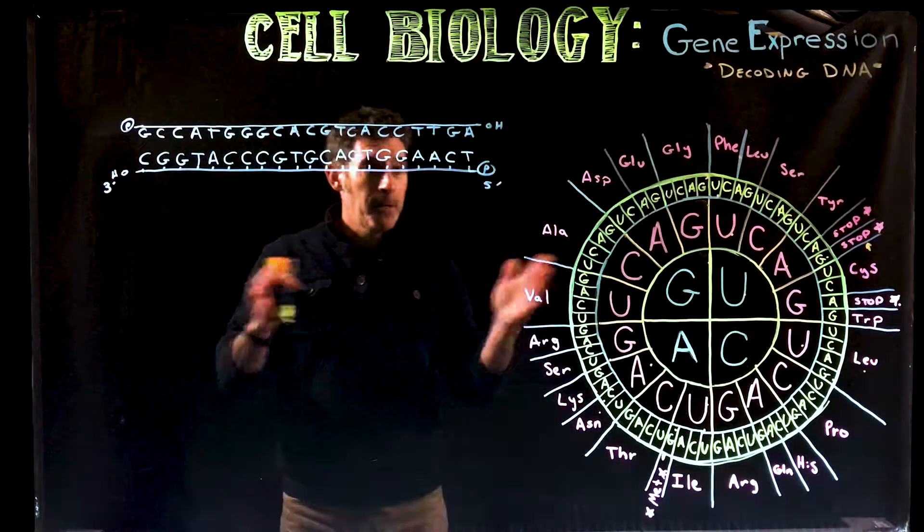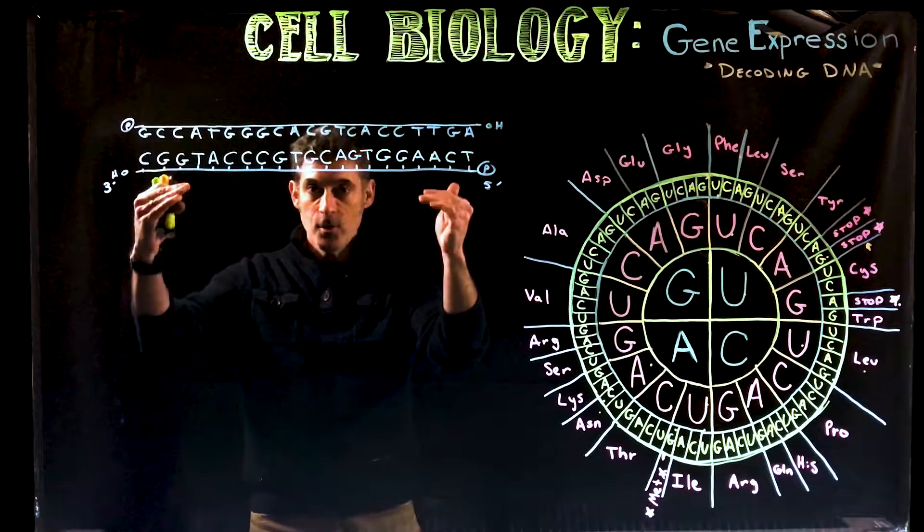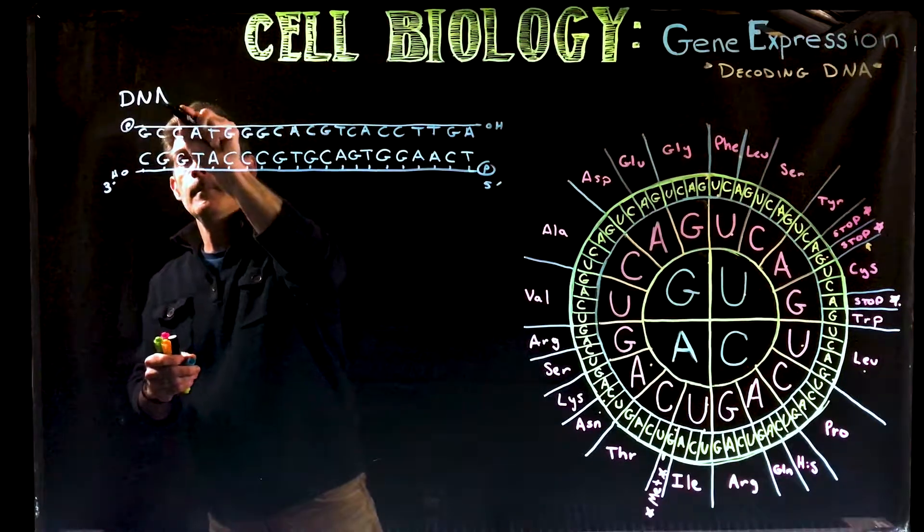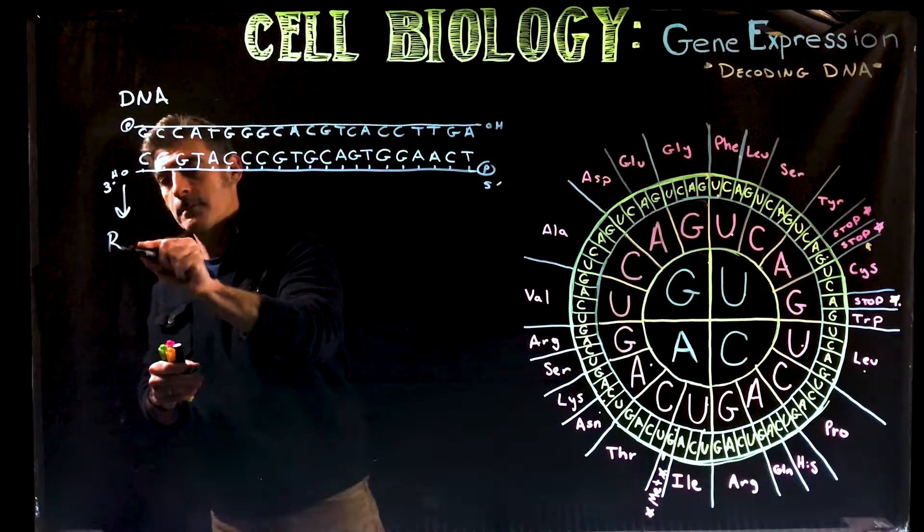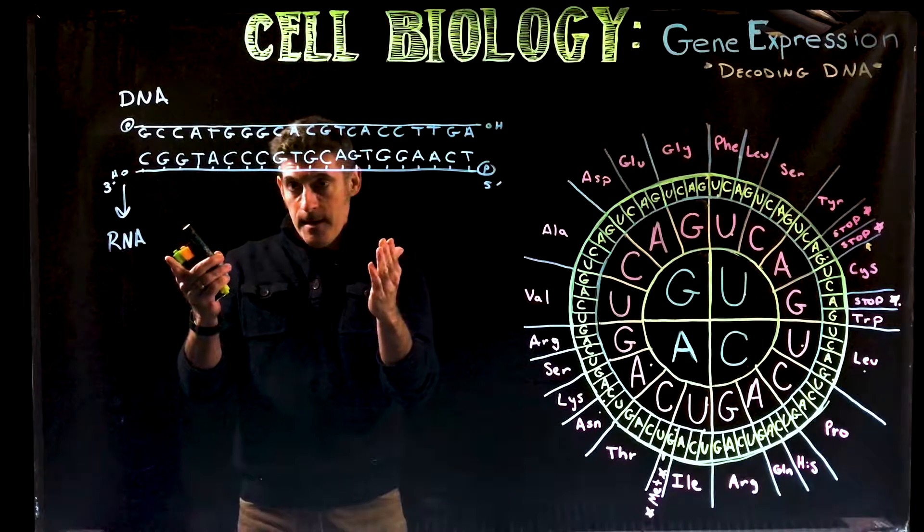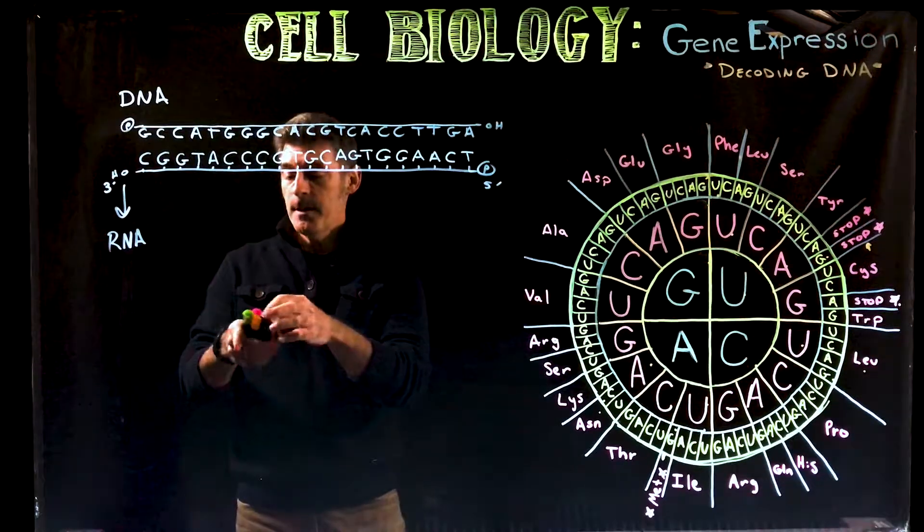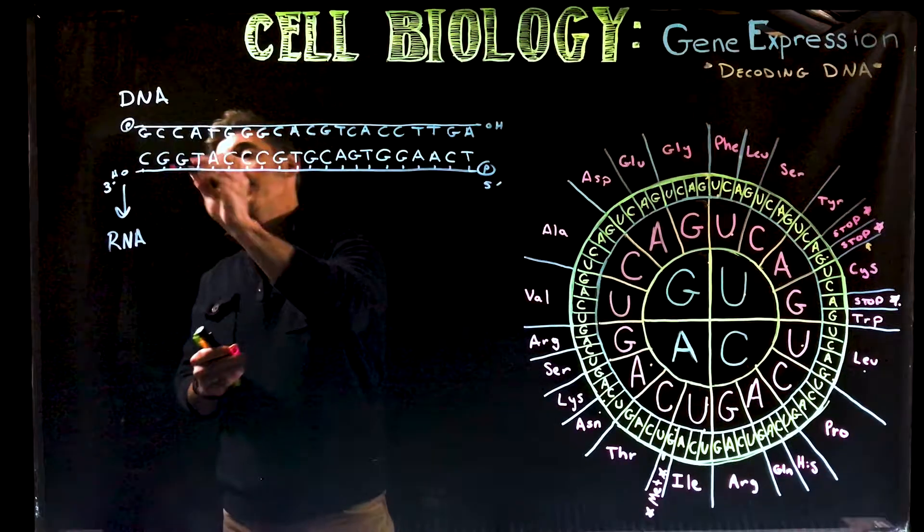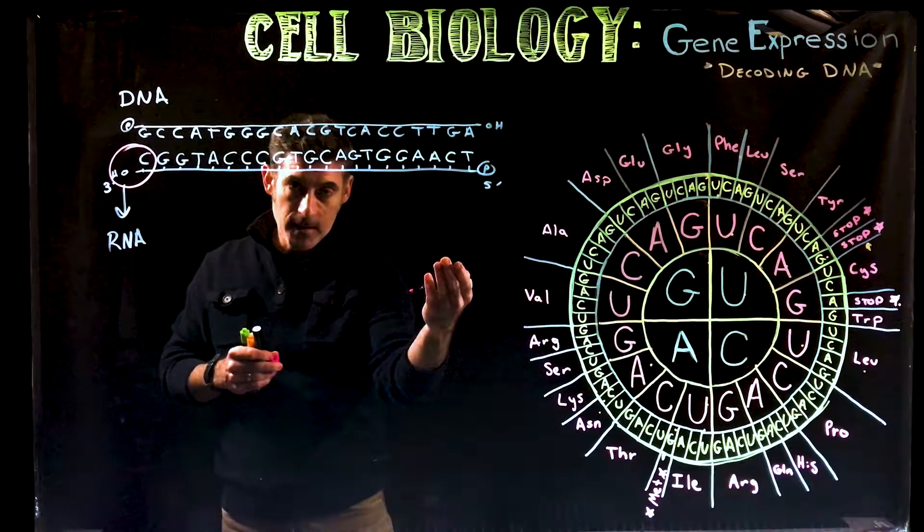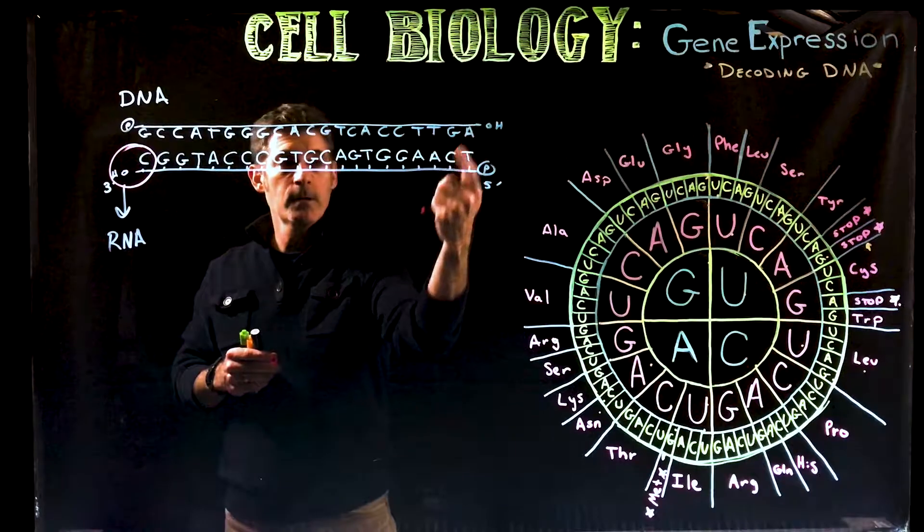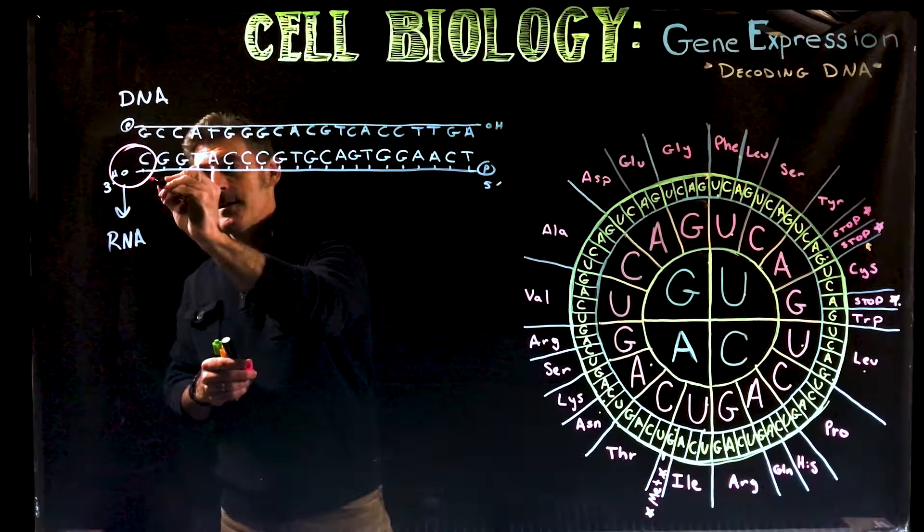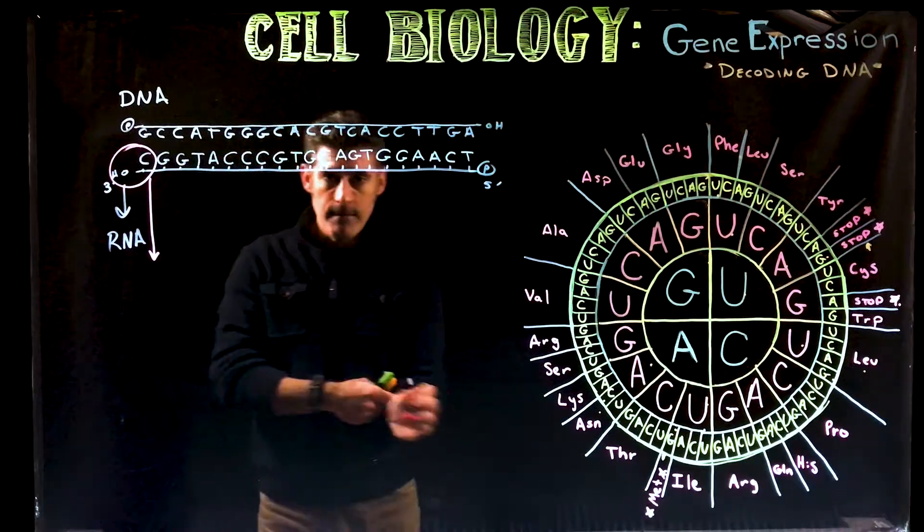We're going to start off stepping through the process. The process is transcription first. We have our DNA and we need to go into RNA. We're going to be reading one of these strands, using it as a template. In the problem I would give you, I would just be giving you that particular template strand, and you'd be using it to make a piece of RNA that would be the same as the coding strand.